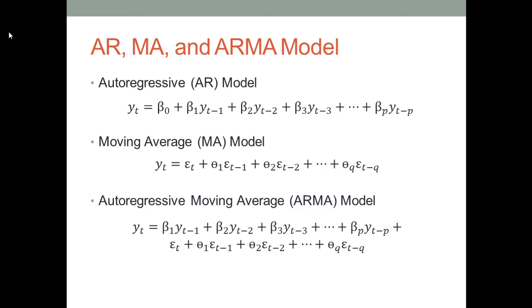The second model is called a moving average model. This model believes that the current data value is a result of previous unexpected events. For example, the current stock price can be a result of unexpected events like the US election results, the COVID-19 pandemic, better sales revenue, a CEO change of the company, and so on. If we use the moving average model, our job is to identify how many days of unexpected events we want to look back to forecast the current value, and what the values should be for coefficients like theta 1, theta 2, and so on. In practice, we use the short name MA to represent the moving average model.